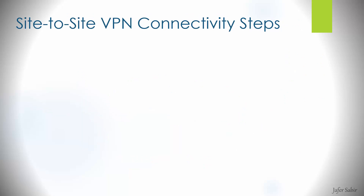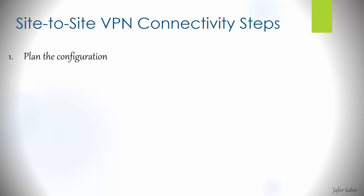Before we dive into the Azure configuration, we will look at what's needed to create a site-to-site VPN connection on Microsoft Azure. The first step is to put pen to paper and plan the configuration — for example, identify the IP addresses needed, the subnets, the pre-shared keys, the crypto algorithms, etc. We can even put it all on a Visio diagram so we have all the information in front of us before we start.